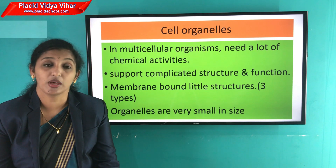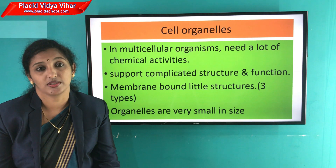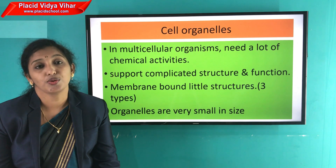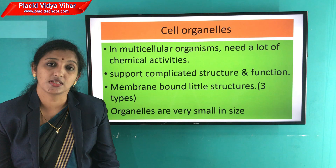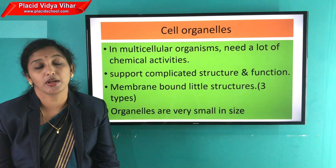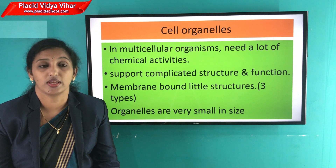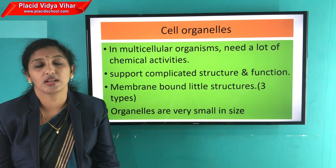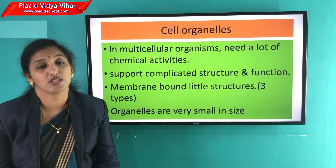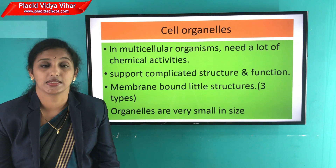In multicellular organisms, a lot of chemical activities are needed to support their structure. To keep these activities in proper order, they have small membrane-bounded structures known as cell organelles. Cell organelles are of three types: first is double membrane, second is single membrane, and third is membrane-less.